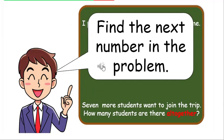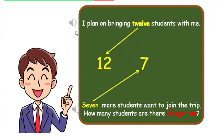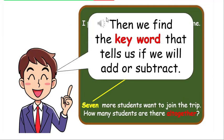Find the next number in the problem. I plan on bringing 12 students with me. Seven more students want to join the trip. How many students are there all together? Then we find the keyword that tells us if we add or subtract.